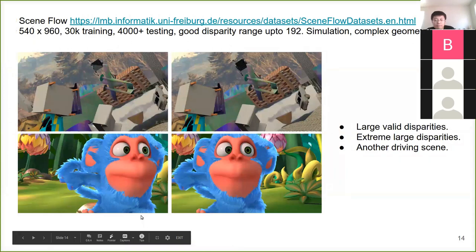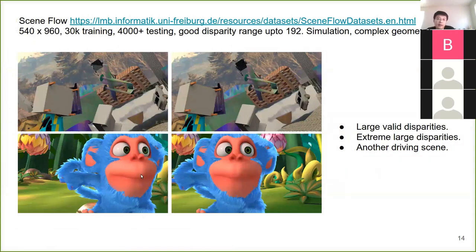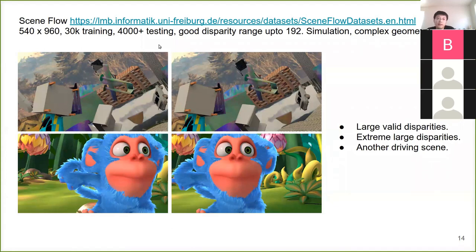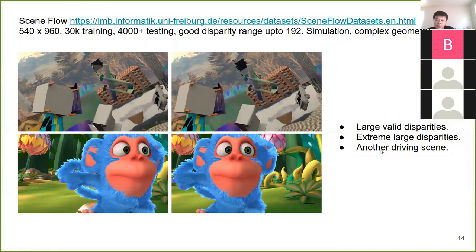Another dataset is the SceneFlow dataset. They get images from simulation, and the number of images is relatively large — about 30K training images and about 4,000 test images. The disparity range is up to about 200 pixels, which is really important because you cannot effectively train a model targeting a higher disparity range. Some true disparities may have extreme large values, so if you're using this dataset, you should filter the ground truth disparity values yourself. Otherwise your training may get slow.